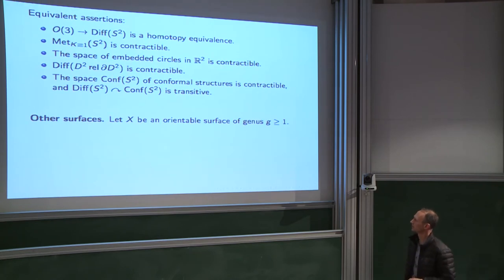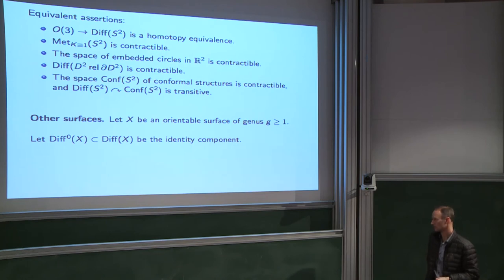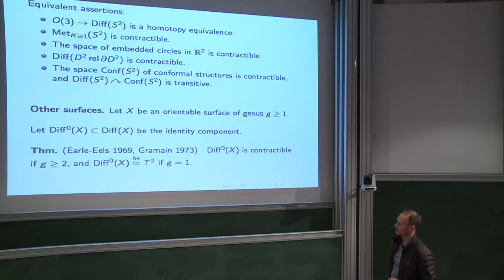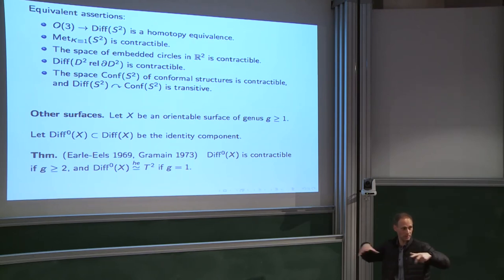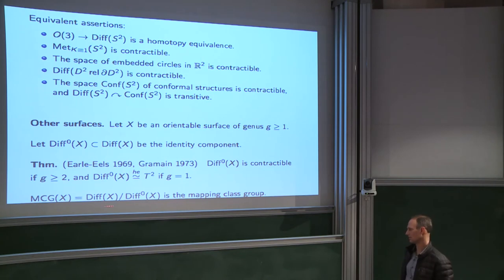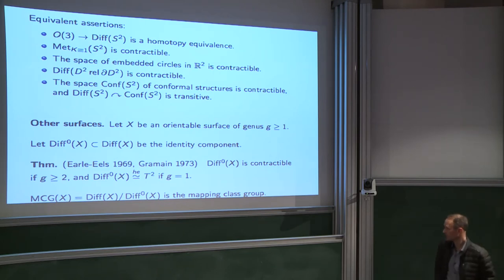What about other surfaces? For an orientable surface of genus g ≥ 1, Diff₀ is the identity component. If the genus is at least 2, its identity component is contractible. If the genus is 1, then the identity component deformation retracts to a torus — the isometry group of the torus is a deformation retract of the identity component of Diff. You can think of the analysis of the diffeomorphism group as being broken into two pieces: the identity component, and the quotient — the mapping class group — which has been understood for a long time.